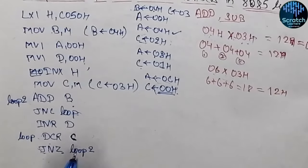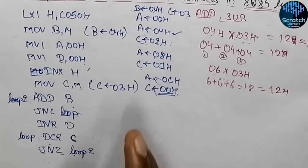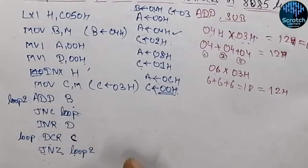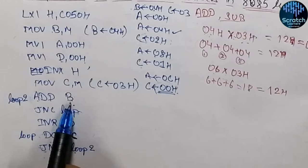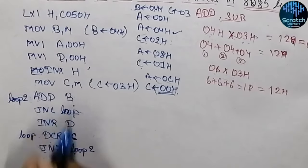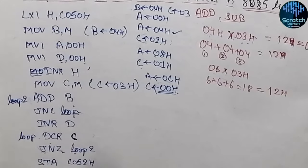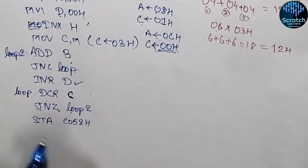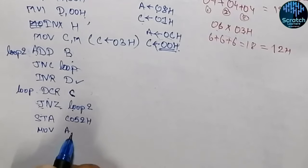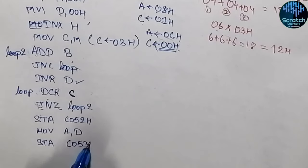So when C register becomes 00 hex, the next statements will be executed. As the multiplication is completed, we need to store the results — both the carry part and the result part. The result is stored in the accumulator, since we are adding all the data and storing it in the accumulator. So we will store the content of accumulator in memory location C052 hex. We also need to store the carry part. The carry part is in D register, so first we will move the content of D register into the accumulator and then store this result in C053 hex.